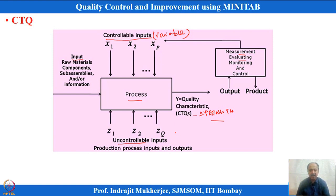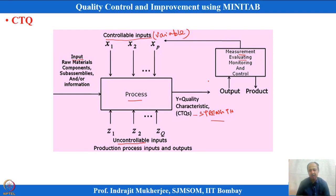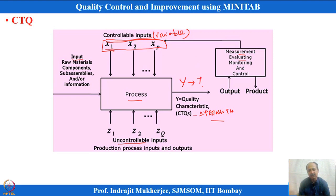Uncontrollable variables need to be considered to make a product robust — that will be covered in subsequent lectures. These variables are uneconomical to control and we may have no information about them. If we can control the controllable variables properly, our output will be within specification. In the presence of uncontrollable variables, we need to set the machine parameters so that the output Y is close to the target.